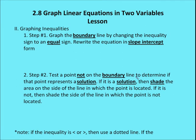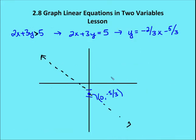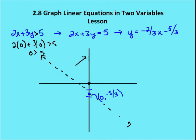Step two: test a point not on the boundary line to determine if it is a solution. If it is a solution, shade the area on that side of the line; if not, shade the other side. We'll test the point (0, 0): 2 times 0 plus 3 times 0 gives 0, and 0 is not greater than 5. So the side of the graph containing (0, 0) does not represent the solution.